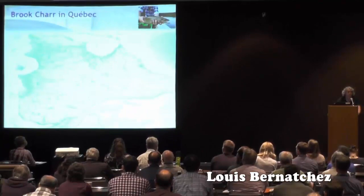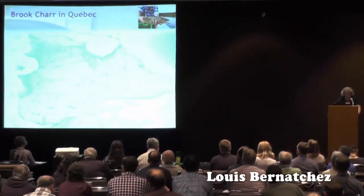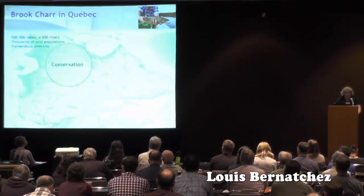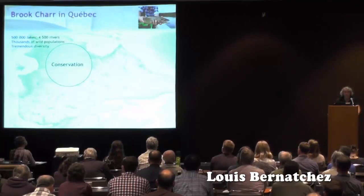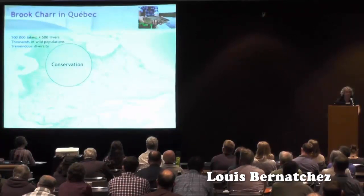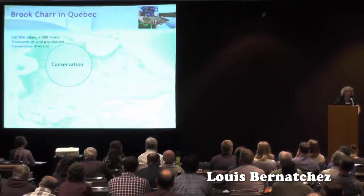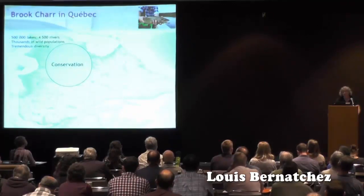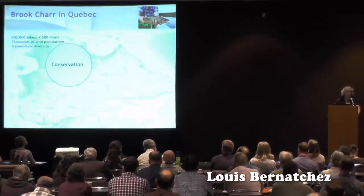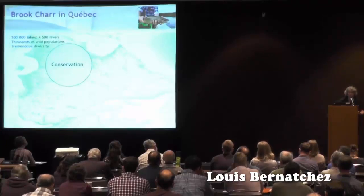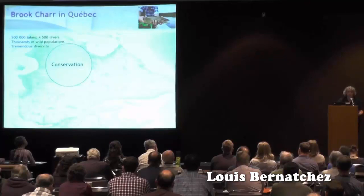Most of the work I've done on brook trout has happened in Quebec. From the conservation side, Quebec has half a million lakes and 4,500 rivers, and most of these water bodies are occupied by thousands of wild populations of brook trout. These populations exhibit tremendous diversity — we find them in the tiniest streams to the largest lakes, in coastal marine areas and fresh water, and across a north-south gradient of temperature and climate.